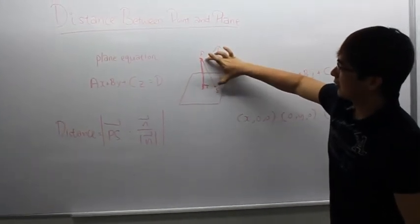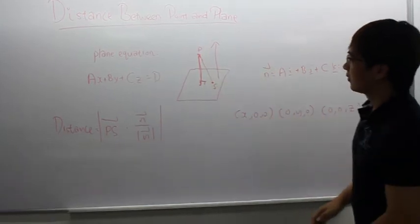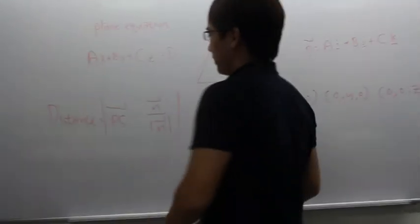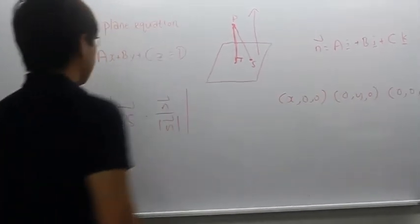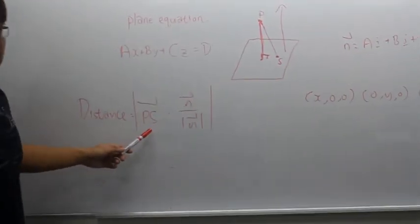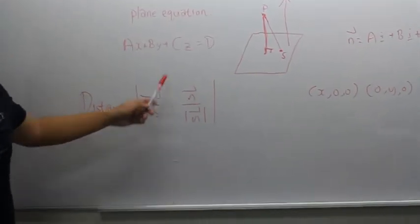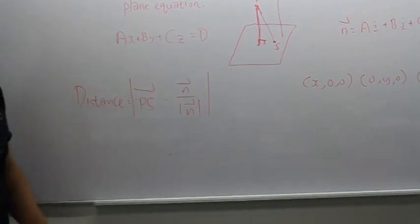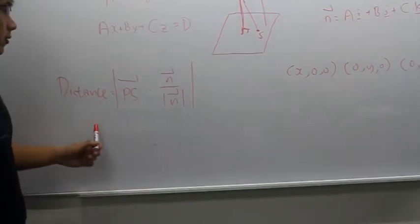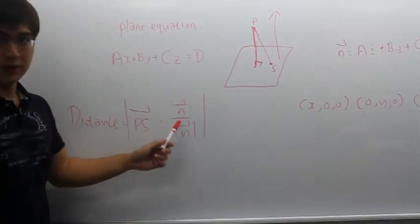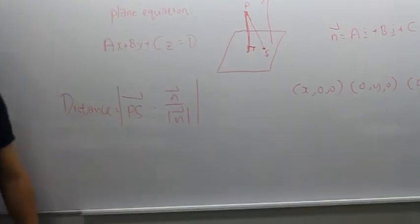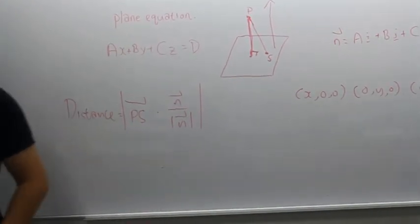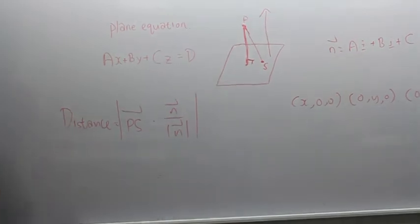So you project PS onto the normal. By finding the actual distance, the formula will be the vector PS dot n over the magnitude of n, with a modulus. This is actually the scalar component of PS onto n. I'll give a minute for you to think about this and I'll pass to the next example to Jason.